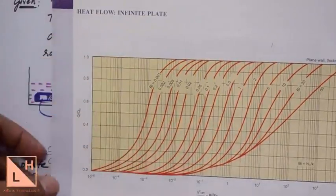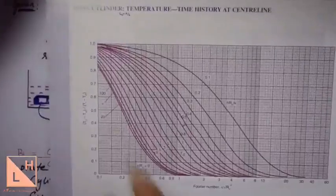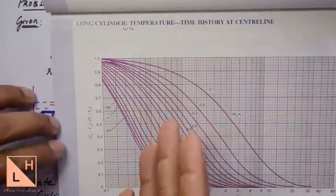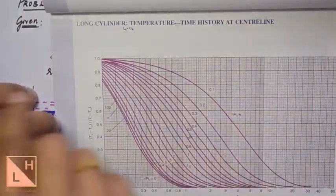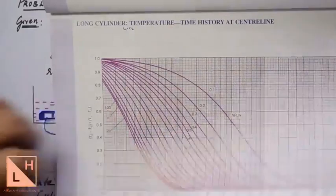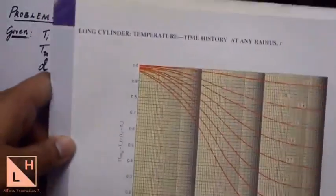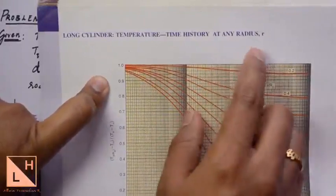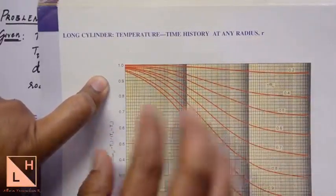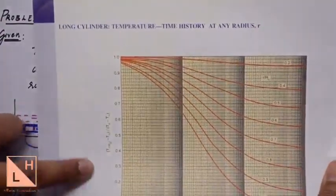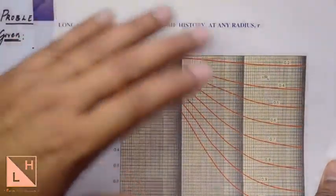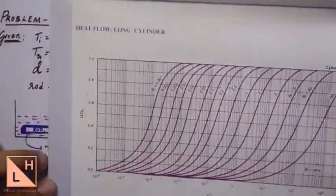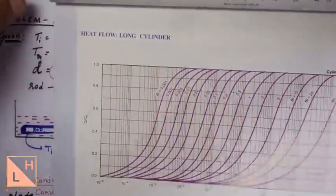So there are three charts per shape. The first gives temperature-time history at the center or mid plane. For infinite plate the second chart gives history at any distance x from 0 to L. For a long cylinder the second chart gives history at any radius r. The third chart always gives the heat flow equation. For a sphere, the first chart gives temperature-time history at the center, the second at any radius r, and the third the heat flow.